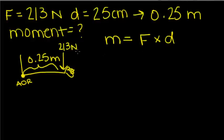This distance we have is 0.25 meters, and we have a force of 213 newtons. So we're multiplying this force by a given distance. Moment is defined by a force acting at a distance from an axis of rotation.